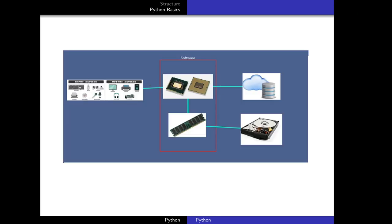This is how the computer parts look in real life. We have input devices like keyboard, mouse, game controllers, and microphones. Output devices include monitors, printers, headphones, speakers, and projectors. The CPU looks like a small chip. Then we have main memory and secondary storage devices like hard disks and flash drives. Network information is usually stored in databases in the cloud.